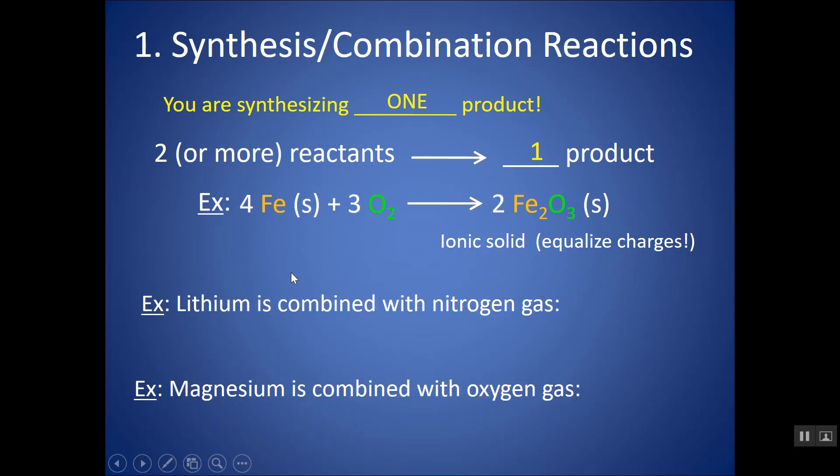So let's look at an example. Lithium is combined with nitrogen gas. This is a synthesis or a combination reaction. I have two elements combining to form one product. Lithium by itself is not diatomic, so I would write it as Li by itself, and metals aside from mercury are solid at room temperature. Nitrogen gas. Nitrogen is one of my Hofbrincl, one of my diatomic elements, so I'd write it as N2, and it's telling me it's a gas.